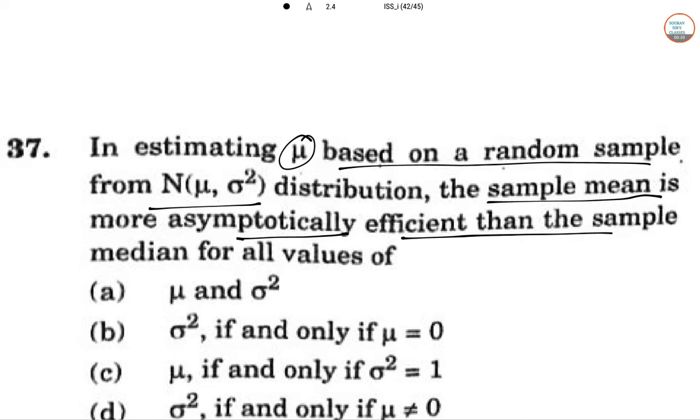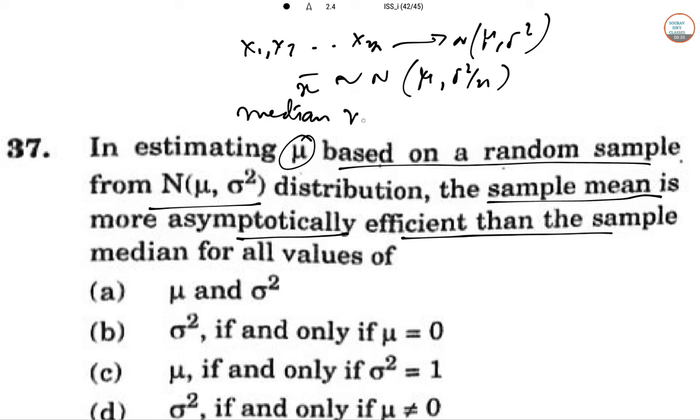If x1, x2, dot dot dot xn follows a normal distribution with mu and sigma square, then x bar follows a normal distribution with mu and sigma square by n. The median follows a distribution with mean mu and variance pi by 2n times sigma square.